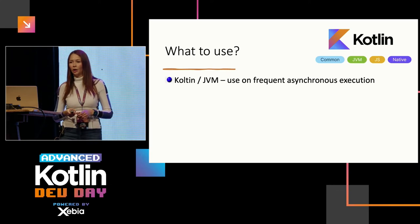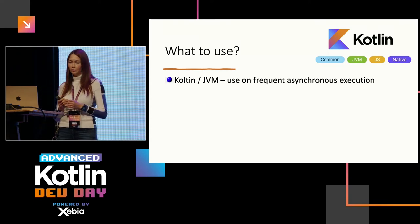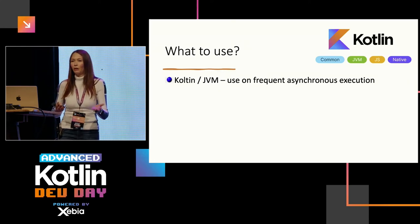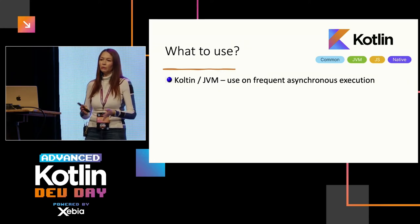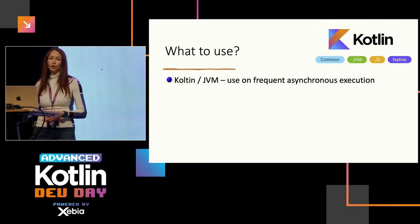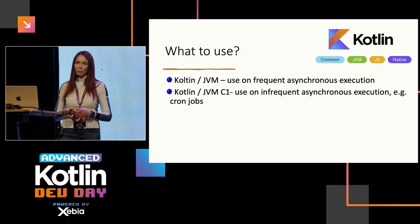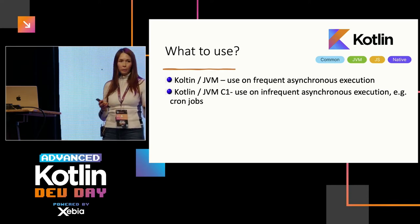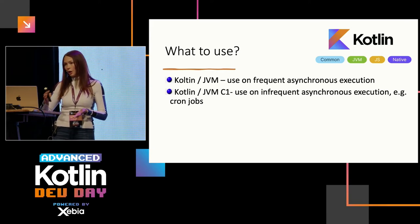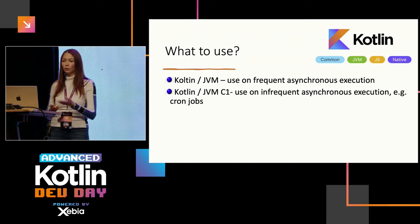So what should you use? Kotlin JVM is really easy and quick to develop. If you're not worried about p95 and you're running asynchronous, frequent load, just use that. Cold start isn't really relevant if you look at total execution time — if you execute for a long time it catches up and wins over others like JS. For JVM C1: if you always have cold starts — for example cron jobs, or infrequent traffic — this is a great option.